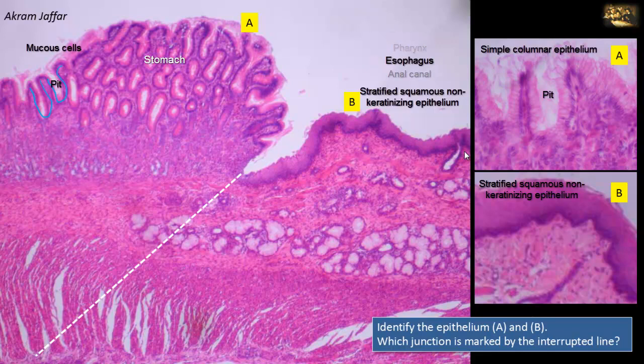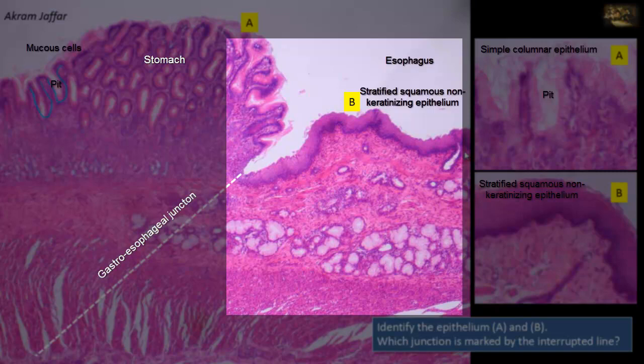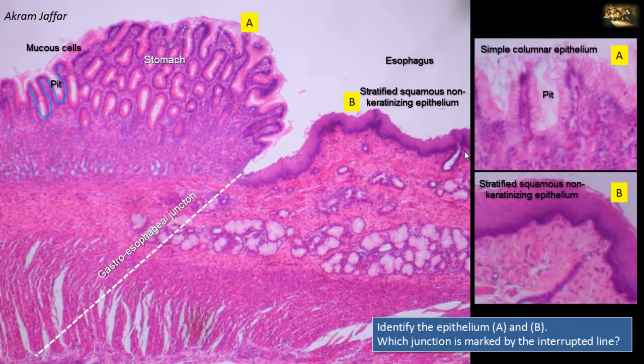The junction is thus the gastroesophageal junction. On the right side of the interrupted line — the proximal part of the tube — there are several mucous glands in the submucosa, characteristic of the esophagus, particularly its upper or lower part. The transition of epithelium at this junction is abrupt. Similar abrupt transitions occur at the gastroduodenal junction, the ileocecal junction, and the rectoanal junction.